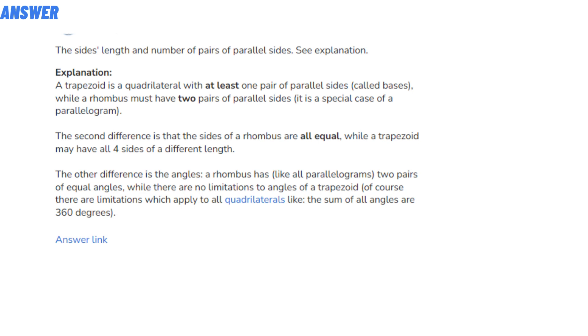The other difference is the angles. A rhombus has, like all parallelograms, two pairs of equal angles, while there are no limitations to angles of a trapezoid. Of course, there are limitations which apply to all quadrilaterals, like the sum of all angles is 360 degrees. So that's the answer to the question.